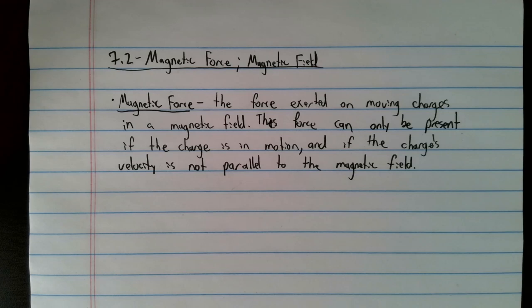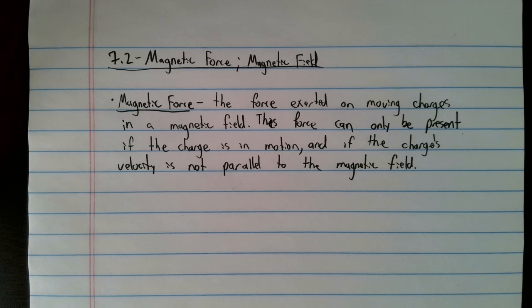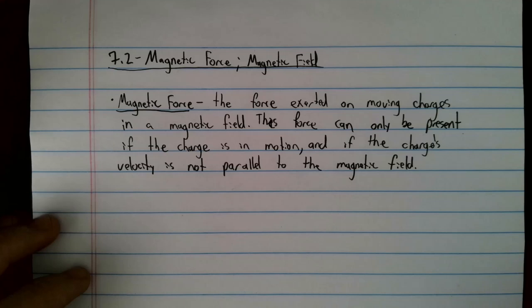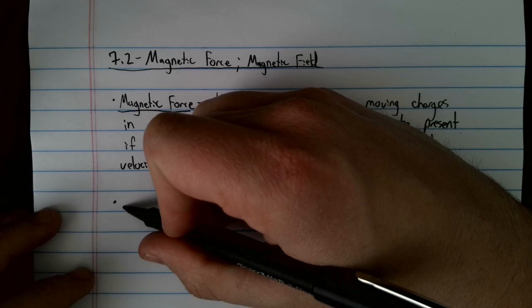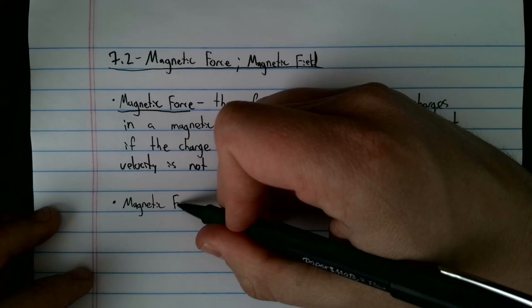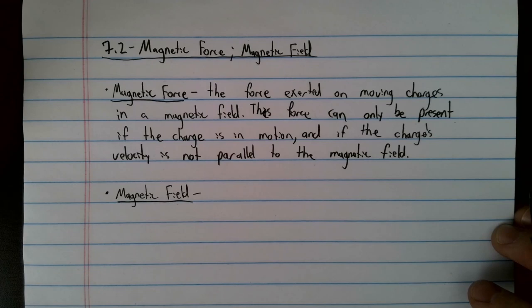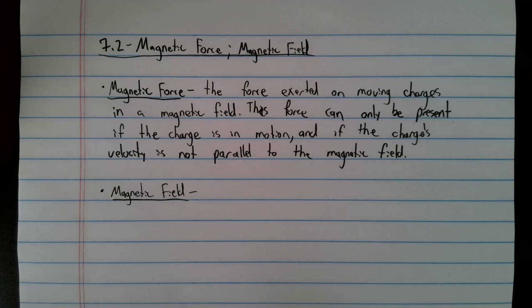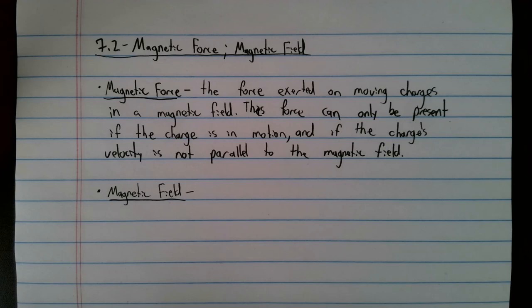This force can only be present if the charge is in motion and if the charge's velocity is not parallel to the magnetic field. Next we'll define the magnetic field, and we'll have an equation that links these two together. A magnetic field is one of those concepts that, much like what we've seen before, has an equation as its definition. It doesn't really have a definition in words - it is instead governed by an equation.